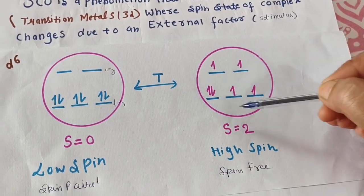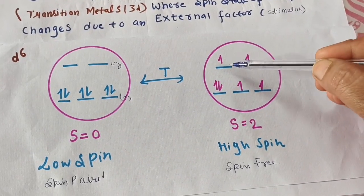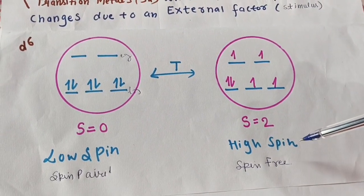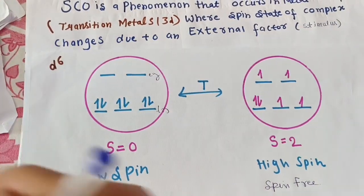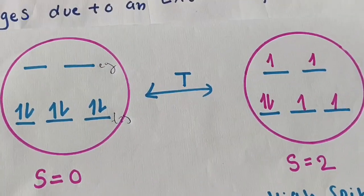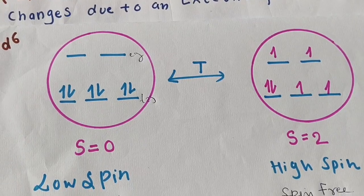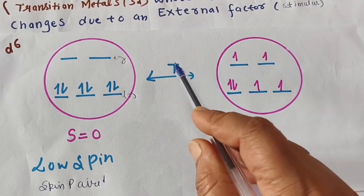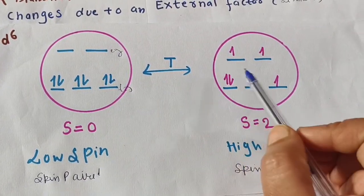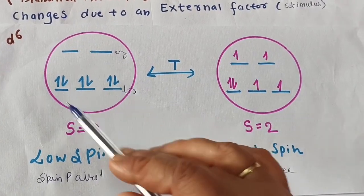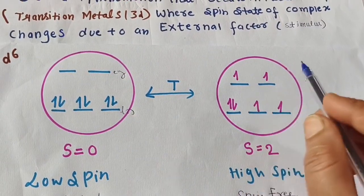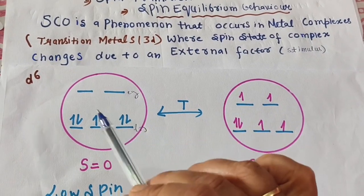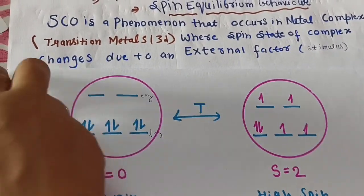If we arrange the six electrons in the high spin state — that is, with the maximum number of unpaired electrons — this is known as the high spin or spin-free state. By changing temperature, electrons can become unpaired. This change from one spin state to another is termed spin crossover.